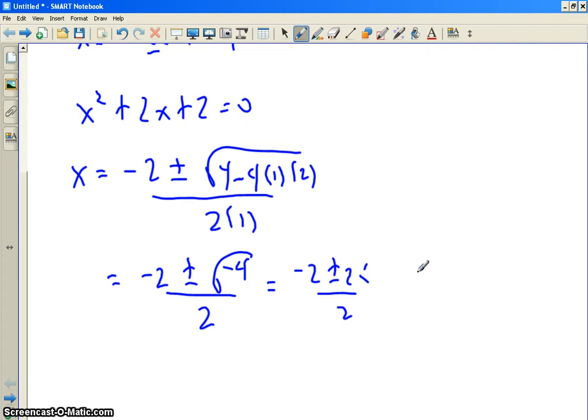That's negative 2 plus or minus 2i over 2. Well, the 2 factors out, so it cancels with the 2, negative 1 plus or minus i. So in this case, it's a complex root with a real part and an imaginary part.